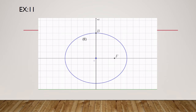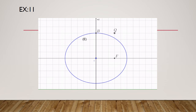Exercise 11: construct the principal vertices and the directrix D of an ellipse given its center O, focus F, and a secondary vertex B. This exercise also depends on Exercise 9. Since OFQB is a rectangle, by completing this rectangle we get the point Q. We then construct segment OQ.